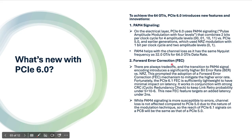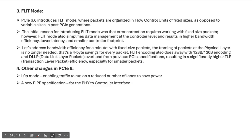To use the Forward Error Correction algorithm, the packet format must be fixed. That's why Gen 6 introduced FLIT mode, where packets are organized in Flow Control Units of fixed sizes. In FLIT mode, there is no need for framing tokens such as Start of TLP, Start of DLLP, END, and EDB — these framing tokens are not required. FLIT mode provides higher bandwidth efficiency and lower latency by using 1b/1b encoding and removing framing tokens.